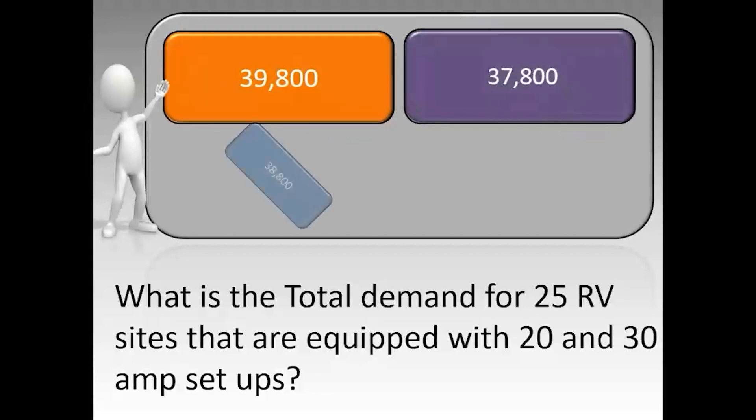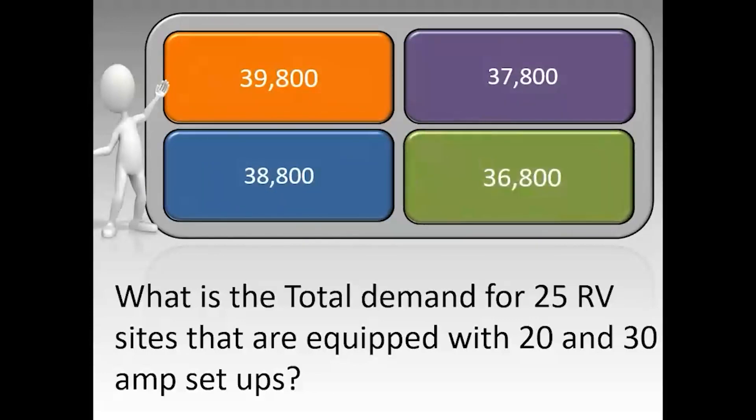What is the total demand for 25 RV sites that are equipped with 20 and 30 amp setups? The correct answer is 37,800.